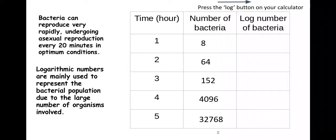You're looking for the log button on your calculator. So you press the log button and then the number 8, you should get to two decimal places 0.9. And if you did the same for 64, put log 64, you get 1.81, and so on.